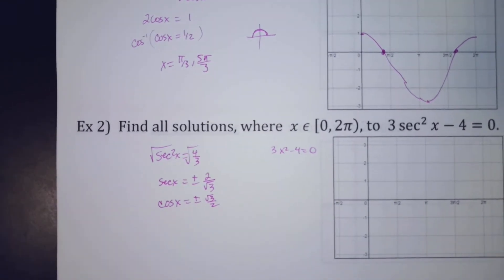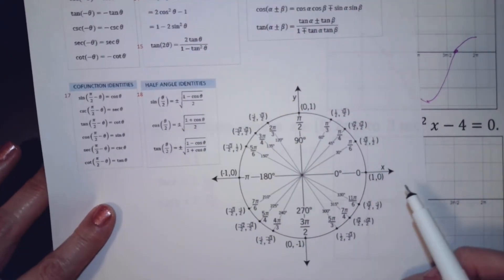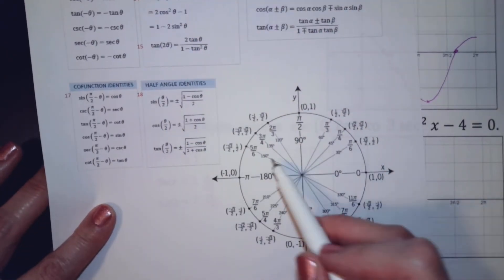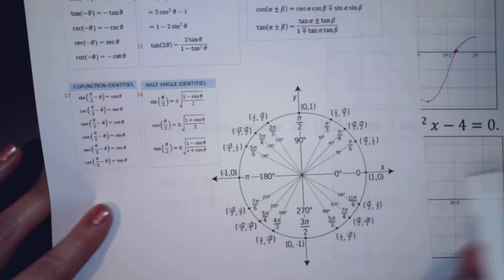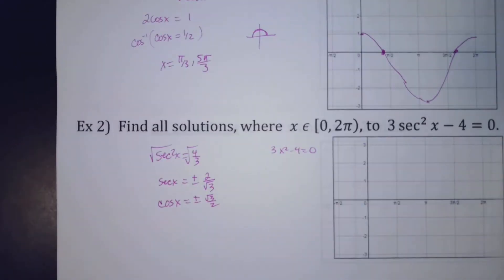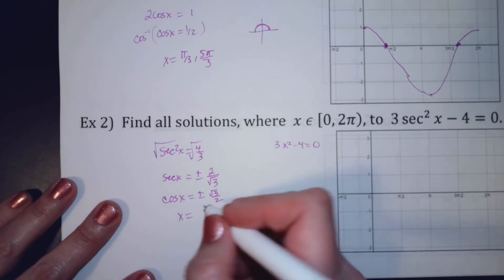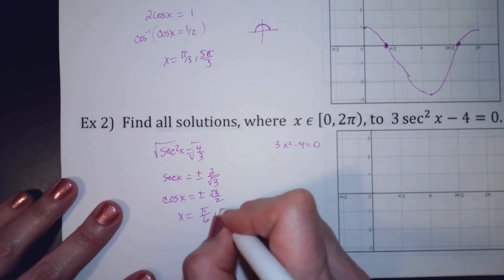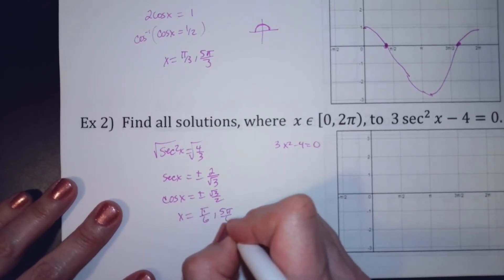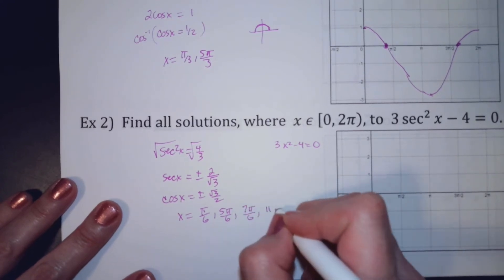Back to the unit circle — cosine equals plus or minus radical 3 over 2, so it's plus or minus, meaning I've got four answers. And we're going to answer in radians because that's what it says. So x could be pi over 6, 5pi over 6, 7pi over 6, or 11pi over 6.